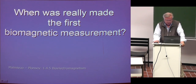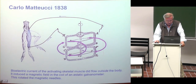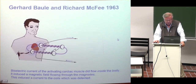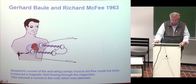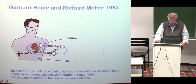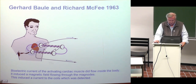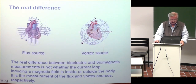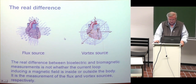When was really made the first biomagnetic measurement? In 1838, Carlo Matteucci recorded the first bioelectric signal from frog muscle, fed the current to a coil which induced a magnetic field that turned a detector. When Baule and McFee recorded the electric activity of the heart with a magnetic detector, the magnetic field induced an electric current in the lead wound around the magnetometer. The difference is that it is the flux source which is detected by bioelectricity, and it is the vortex source which is detected by biomagnetism. That is the fundamental difference.